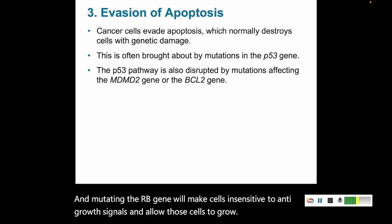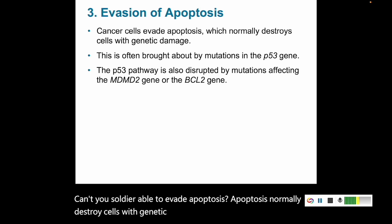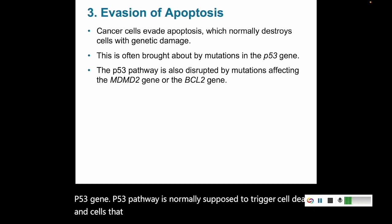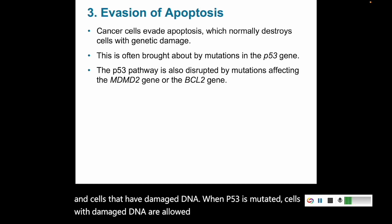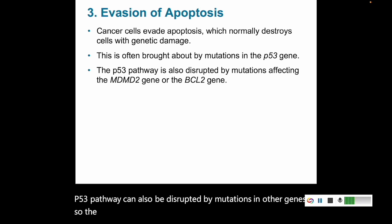Cancer cells are able to evade apoptosis. Apoptosis normally destroys cells with genetic damage — we saw that with mutations in the P53 gene. The P53 pathway is normally supposed to trigger cell death in cells with damaged DNA. When P53 is mutated, cells with damaged DNA are allowed to keep growing. The P53 pathway can also be disrupted by mutations in other genes, such as the MDM2 gene or the BCL2 gene.